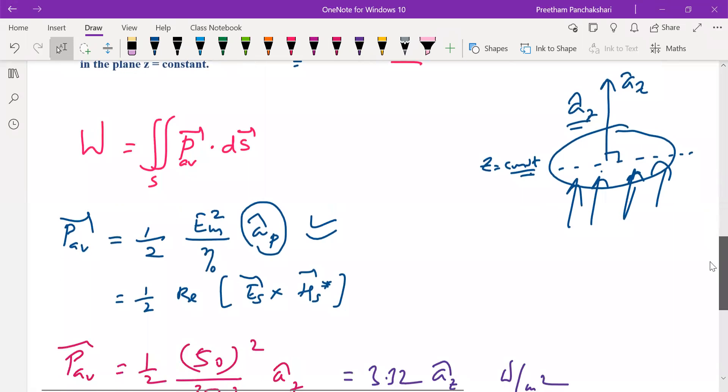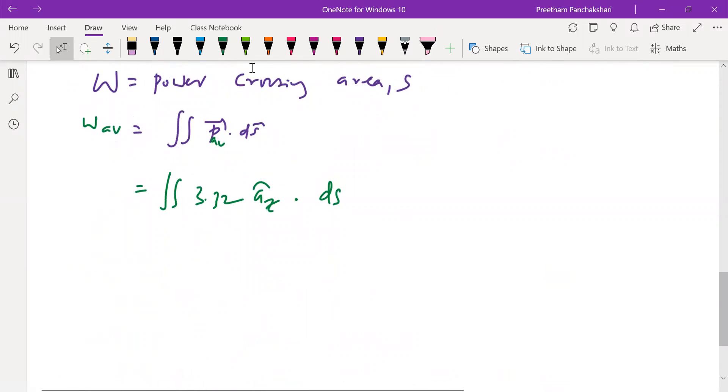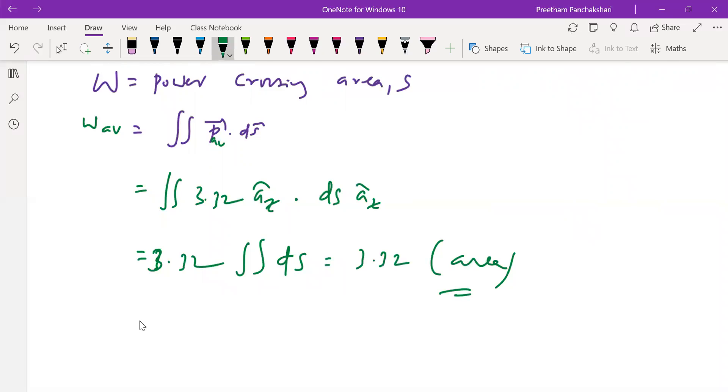Dot area, that is ds. Direction of the area is also positive z. I have just explained here the plane is held at z equal to constant, is perpendicular to z axis. This is also a_z. 3.32 is a constant value so a_z dot a_z is 1, so this is simply the multiplication of 3.32 with total area.